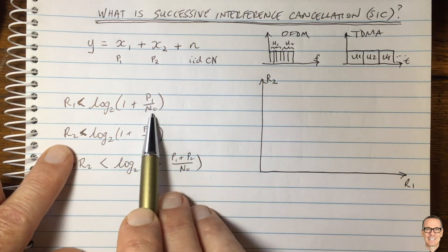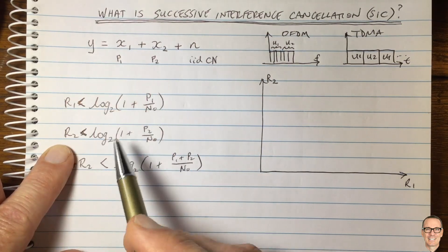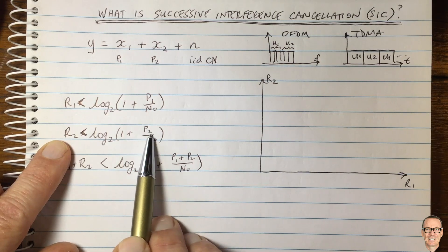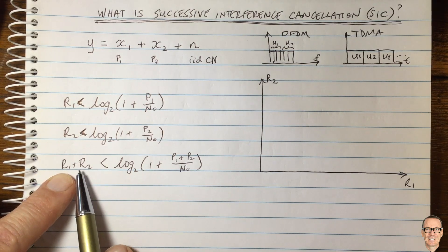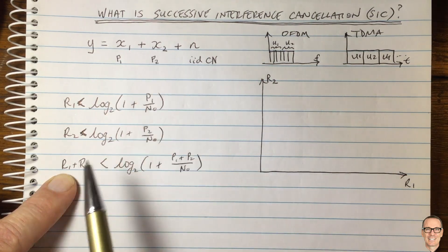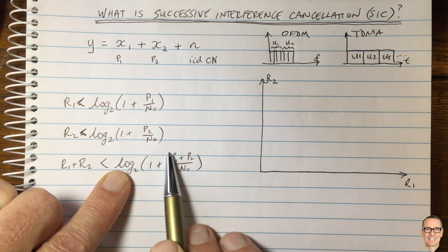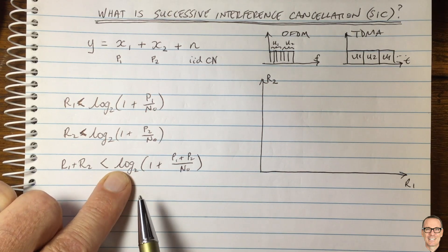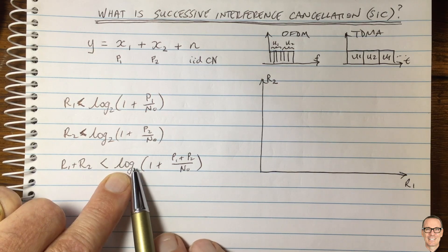The capacity depends on power 1 and the noise, and in this system the noise is the same for both signals since they're received at the same receiver. The same equation holds for user 2 — the achievable rate depends on power 2. There is also a third constraint: the sum-rate constraint. Because users 1 and 2 are sending independent signals, the sum of their rates follows the same formula as if you had a single transmitter with the combined power, which results from the IID Gaussian signaling required to achieve capacity.